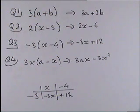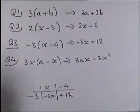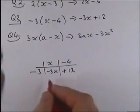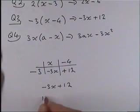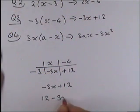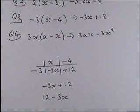Now, we can write the answer as negative 3x plus 12 or 12 minus 3x. They're both the same. Okay. So, hopefully you found that you got those answers correct.